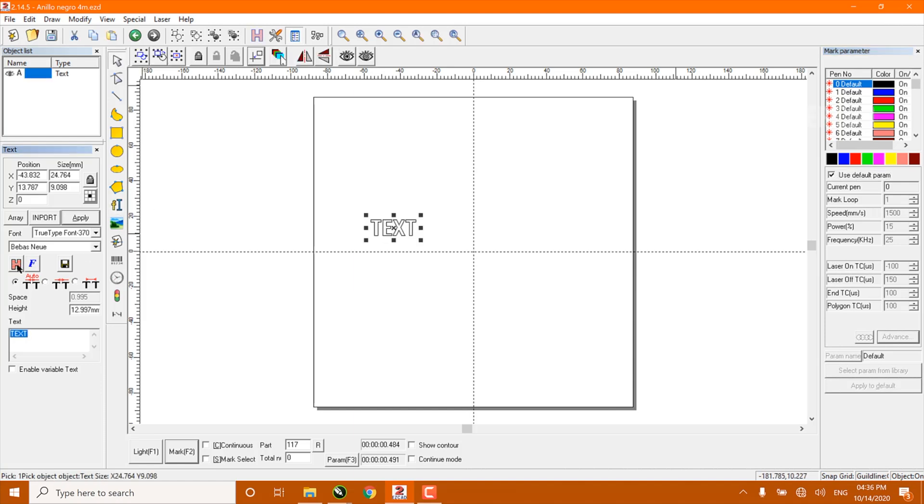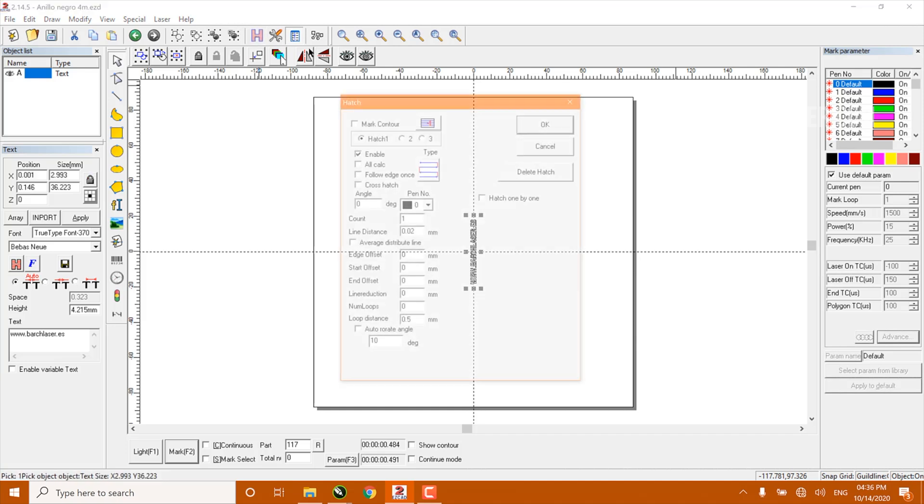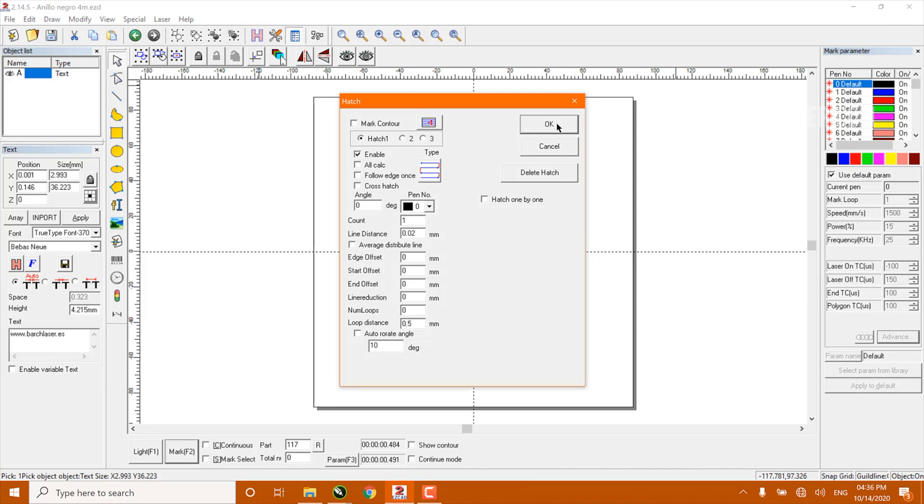Go to the software and use the text tool. Centralize the text and then press Ctrl plus arrow to change the angle to 90 degrees. I'm going to resize it and then use the hatch fill tool.